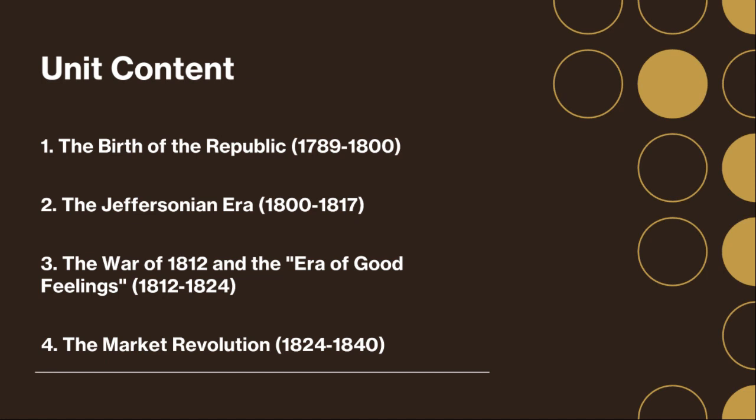We begin in 1789, when George Washington became the first president of the United States. The new nation faced numerous challenges, including a fledgling economy, regional divisions, and foreign threats. One of the earliest issues was the creation of a stable federal government. The ratification of the Constitution in 1787 and the Bill of Rights in 1791 provided the framework for this government.